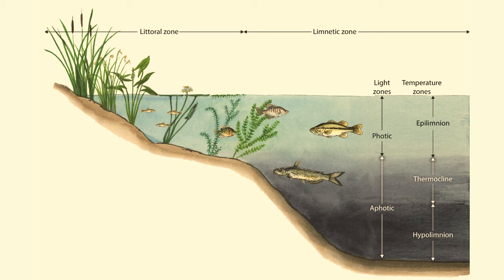Despite not reaching bottom, sunlight still shines into the water in this zone to some depth. The part of the limnetic zone that gets sunlight is called the photic zone. Some species of large open-water fish spend much of their time in this photic zone. They may swim into the littoral zone now and then to feed or spawn, but these visits are only temporary.